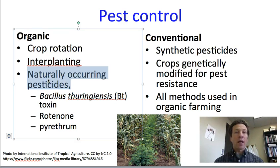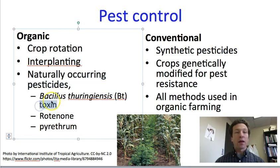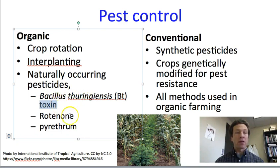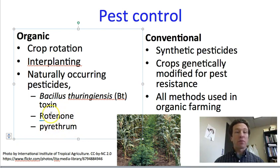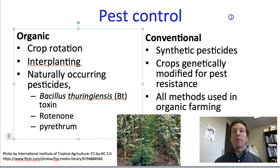It is a fallacy to say that organic agriculture does not use pesticides. What's true is that organic agriculture uses naturally occurring pesticides. This can include a toxin produced by the bacteria Bacillus thuringiensis, or BT — the toxin is called BT toxin. We also have rotenone, which is harvested from plants, and pyrethrums, which are harvested from chrysanthemum and relatives. Because these are naturally produced, they're allowed to be used in organic agriculture, even though they are toxic chemicals. BT, in particular, is not harmful to humans at least in normal doses, which is one reason it is favored as a pest control method.